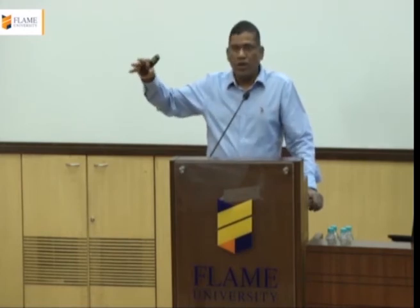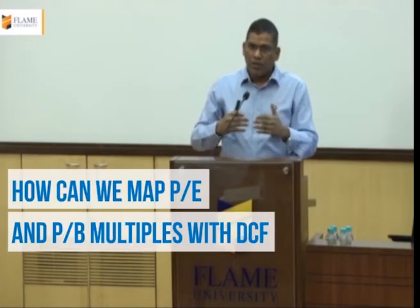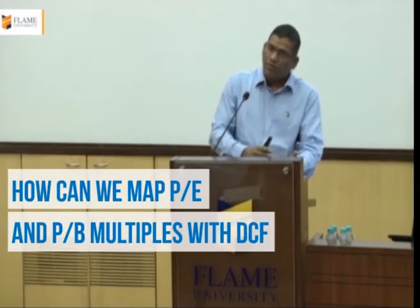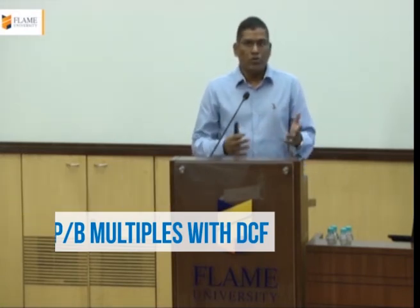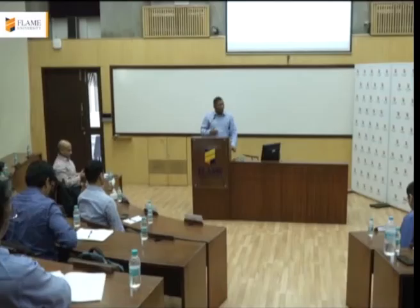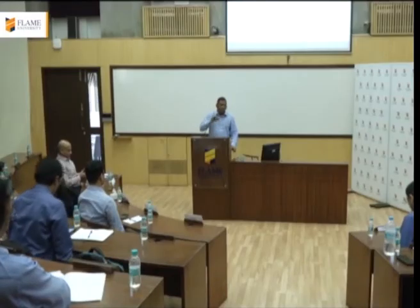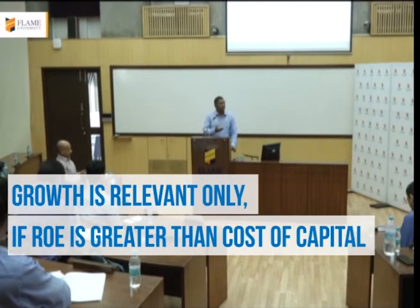What we are doing is arriving at a DCF value for a company, and then dividing that DCF value by the first-year or one-year forward EPS to get the PE multiple. That is how you derive PE directly from the DCF value itself. These are the PE multiples derived from DCF valuation. Growth has more relevance when the quality of the company or industry is very good.